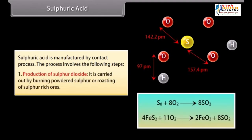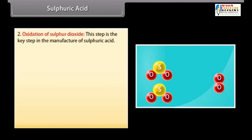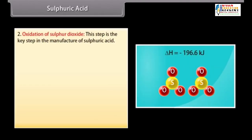Production of Sulphur Dioxide. It is carried out by burning powdered Sulphur or roasting of Sulphur-rich ores. Oxidation of Sulphur Dioxide. This step is the key step in the manufacture of Sulphuric Acid. To yield better Sulphur trioxide, the favourable conditions are the following.